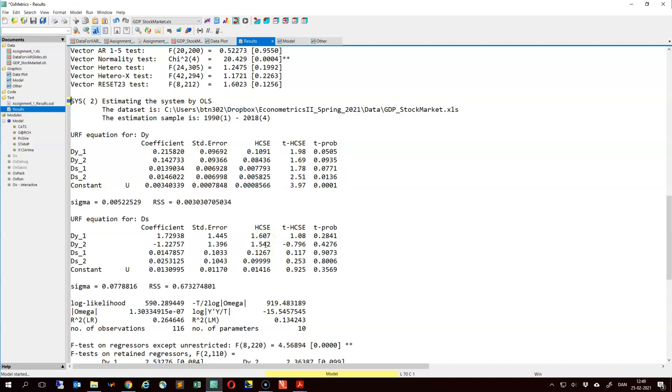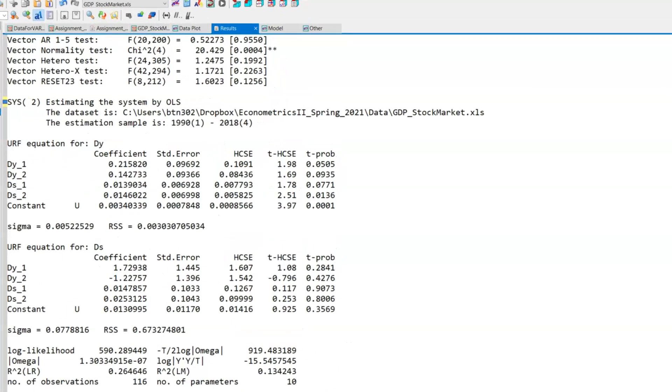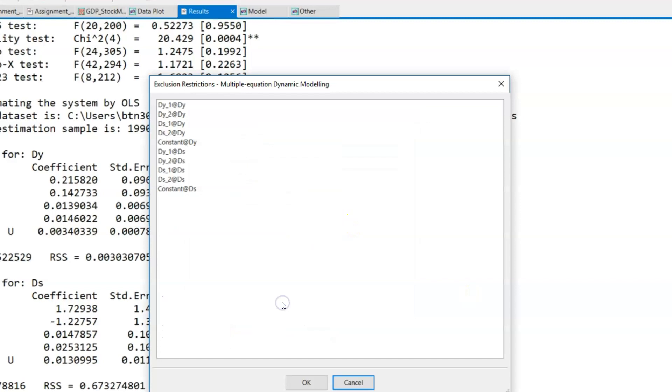We can then try to test whether this model can be reduced to a VAR(1). We can do that by choosing exclusion restrictions. And then we can simply choose to set the second-order lags equal to zero in both equations. So we were testing a hypothesis whether this pi_2 matrix in the VAR(2) model can be set equal to zero. So this pi_2 matrix contains four parameters. And we test if all of those four parameters are jointly equal to zero.